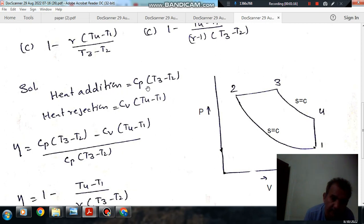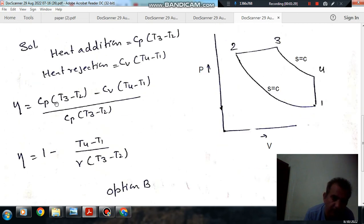Heat addition is only during process 2-3, so that is Cp T3 minus T2. Heat rejection is only in constant volume process 4-1, so that is Cv T4 minus T1. The efficiency is Cp T3 minus T2 minus Cv T4 minus T1, which is work done, divided by Cp T3 minus T2, which is heat supplied.